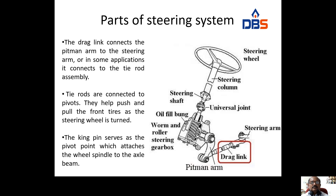This is another diagram: the steering wheel is connected to the steering column, connected to the steering gearbox. Inside the steering gearbox, you can see the worm and roller mechanism. It is a worm and roller mechanism. This rotary motion is converted to the oscillatory motion, connected to the drag link, which is connected to the steering arms and the tie rods. Like this, the steering mechanism works.